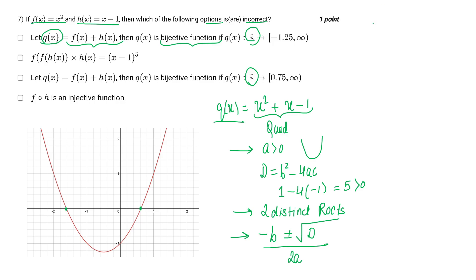Bijective function means it should be surjective and injective both. Injective means one-to-one, and surjective means onto. Onto means codomain equals range, and one-to-one means the graph follows both the vertical line and horizontal line test.